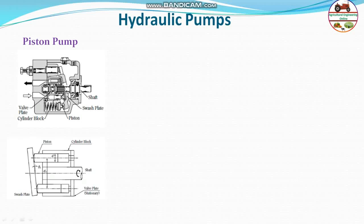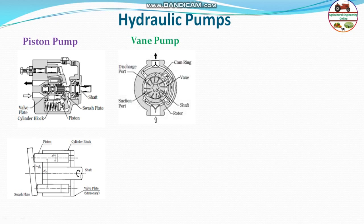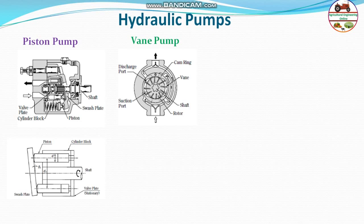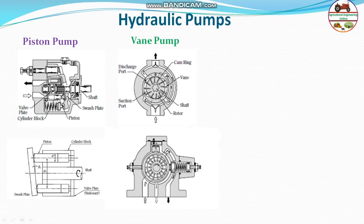The vane pump operates on the principle of expansion and compression of volumes between the vanes and the cam ring. There are a number of vanes and cam rings, with a discharge port and another port. The cam ring and vanes contribute to pressure buildup. Generally, its efficiency is low but can be compensated when the vane wears out. It is susceptible to foreign substances, so the filter is very important. The suction ability is slightly higher than the piston pump. Variable displacement can be changed by altering the eccentricity of the cam ring for the unbalanced type. Its size is small and relatively inexpensive.